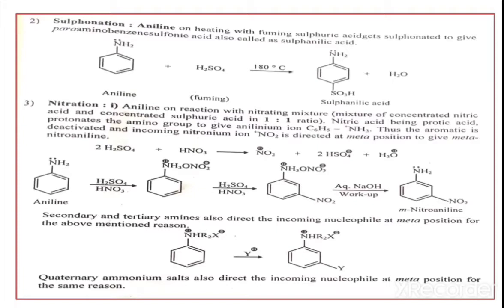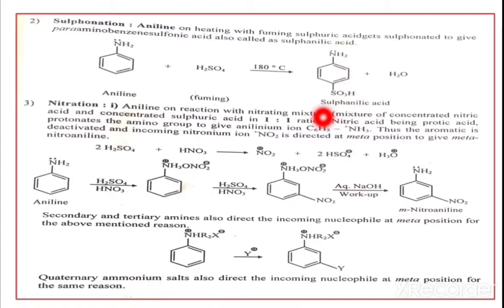Next, sulfonation of amines. Sulfonation takes place on heating with fuming sulfuric acid. Aniline is sulfonated to give para-aminobenzenesulfonic acid, also called sulfanilic acid. Aniline treated with fuming H2SO4 at 180°C gives addition of the SO3H group. Since NH2 is an activating group, the reaction takes place at the para position — so the SO3H group is added at the para position, giving sulfanilic acid as the major product.